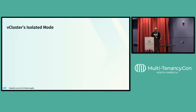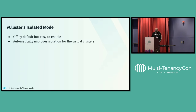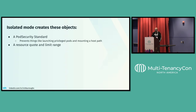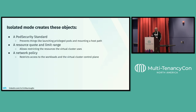vCluster also has a thing called isolated mode. It's off by default, but it's really easy to enable. It automatically improves isolation for the virtual clusters, and it has sensible defaults, but you can customize those using Helm values. Isolated mode creates these objects per virtual cluster: a pod security standard, which prevents things like launching privileged pods or mounting a host path; a resource quota and a limit range, which allow you to restrict the resources the virtual cluster uses; and a network policy, which restricts access to both the workloads and the control plane of the virtual cluster. That only works if your host cluster CNI supports network policies.